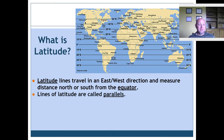Lines of latitude are called parallels. If you have been through Kaiser or along I-5, you'll see a sign that says 'now crossing the 45th parallel.' That means you're crossing a line that's 45 degrees north of the equator, which is important because it's exactly halfway between the equator and the North Pole.